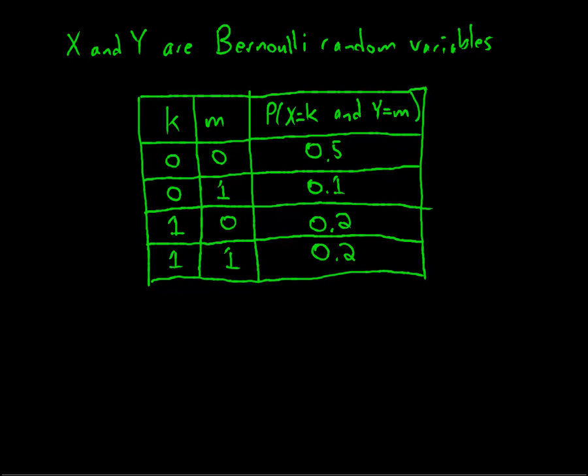In this video, I'm going to walk through an example in which I have two Bernoulli random variables that do not end up being independent. In the text, I give an example of two random variables that are independent, so I thought I'd use this video to give an example of ones that are not.